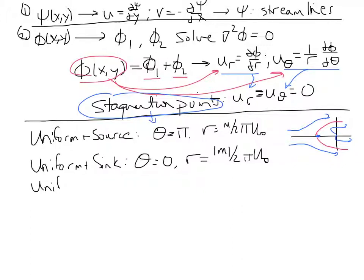Finally, uniform flow plus a doublet creates flow around a cylinder. And the stagnation points for that are at theta is equal to zero or pi, and r is equal to the square root of the doublet strength divided by the uniform flow strength.